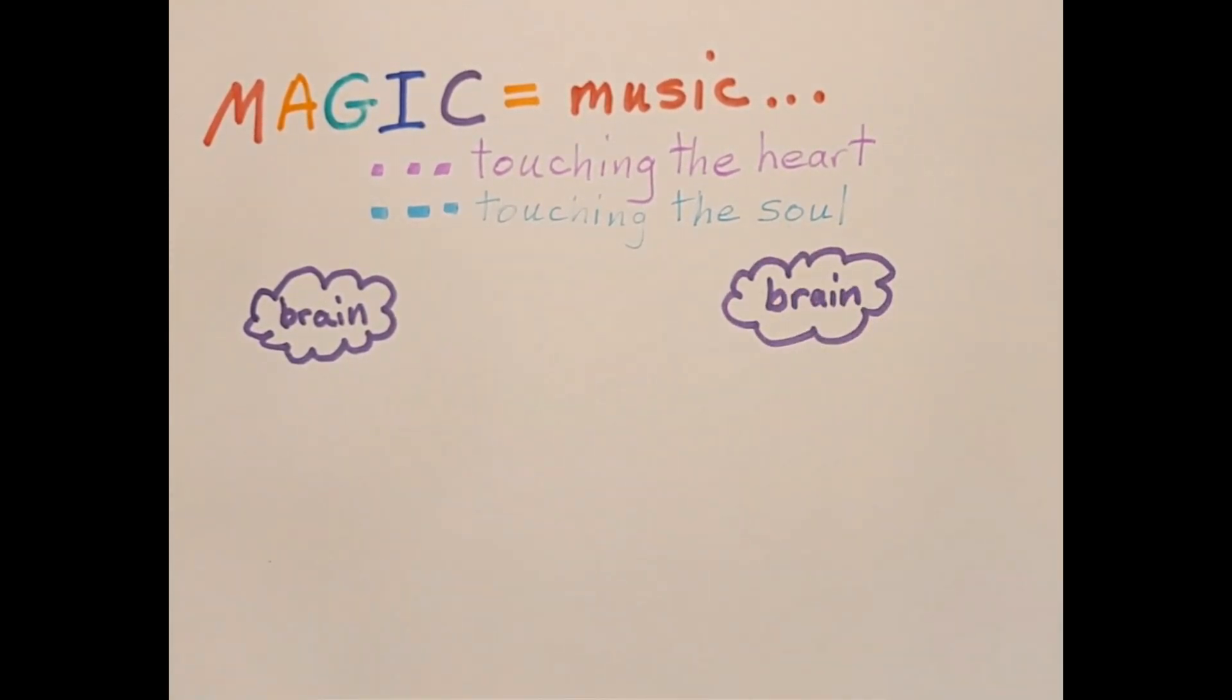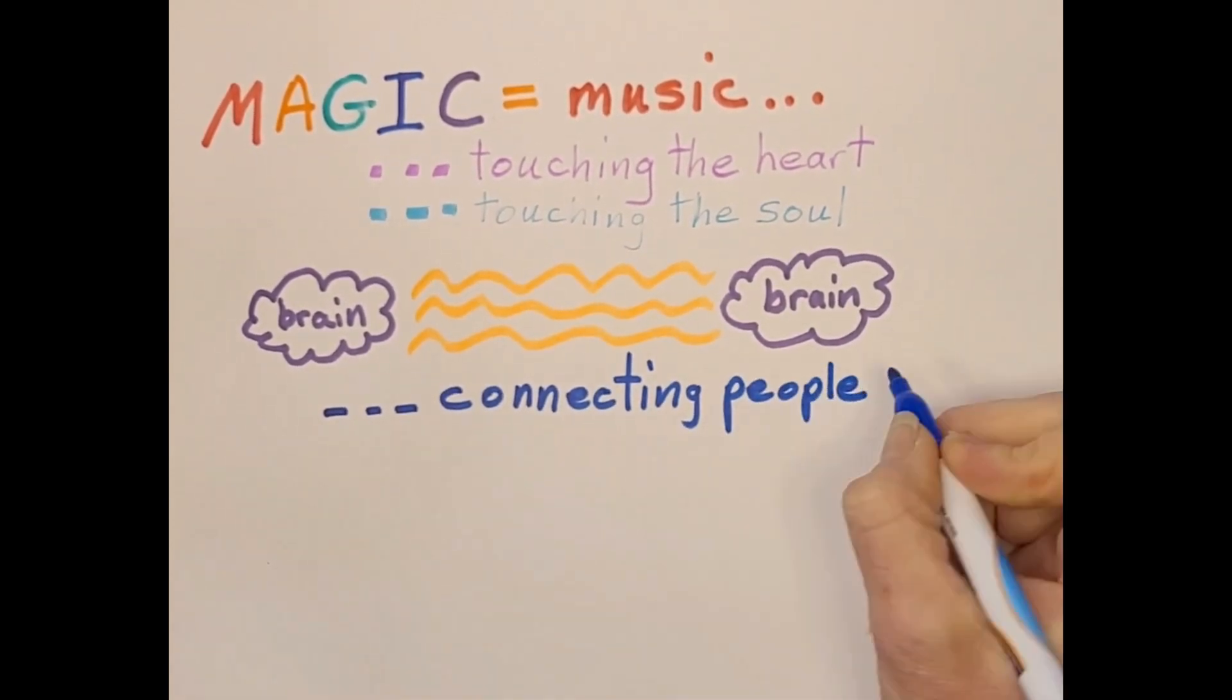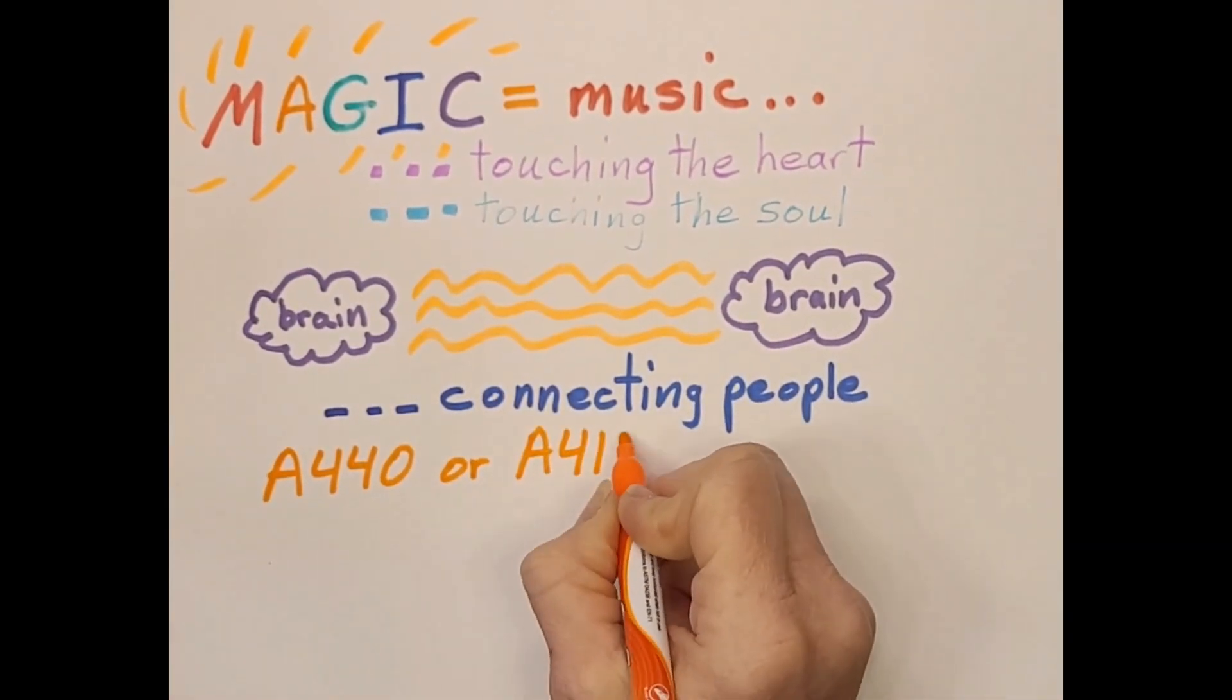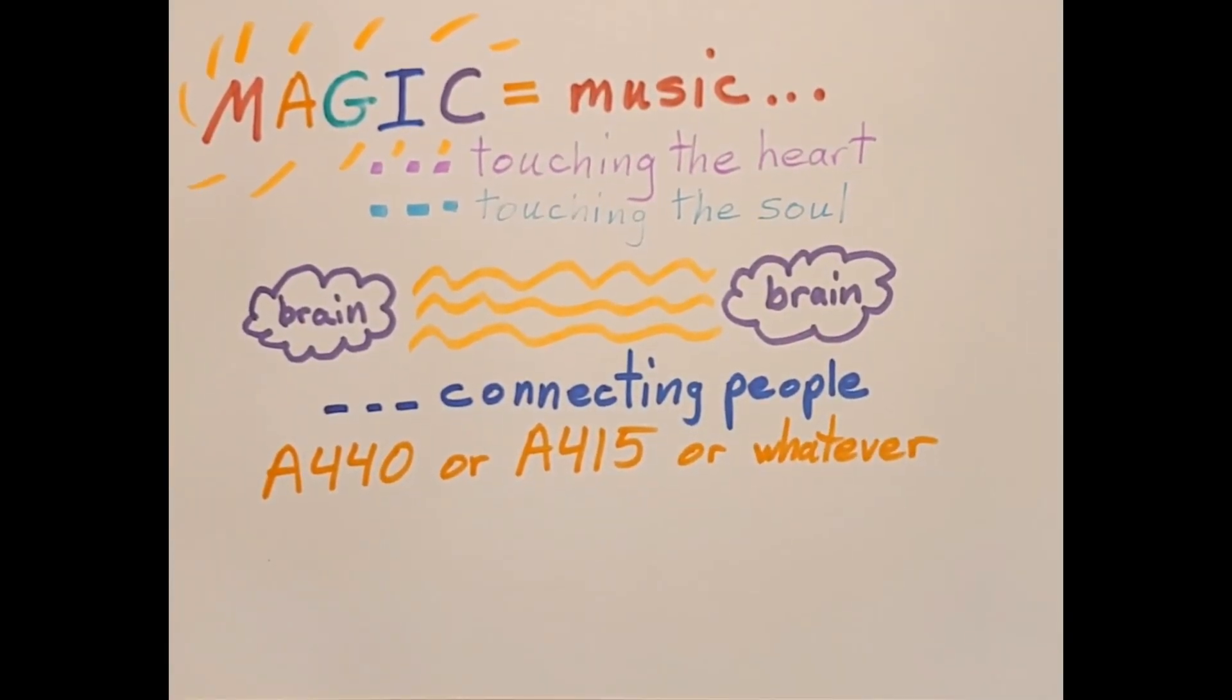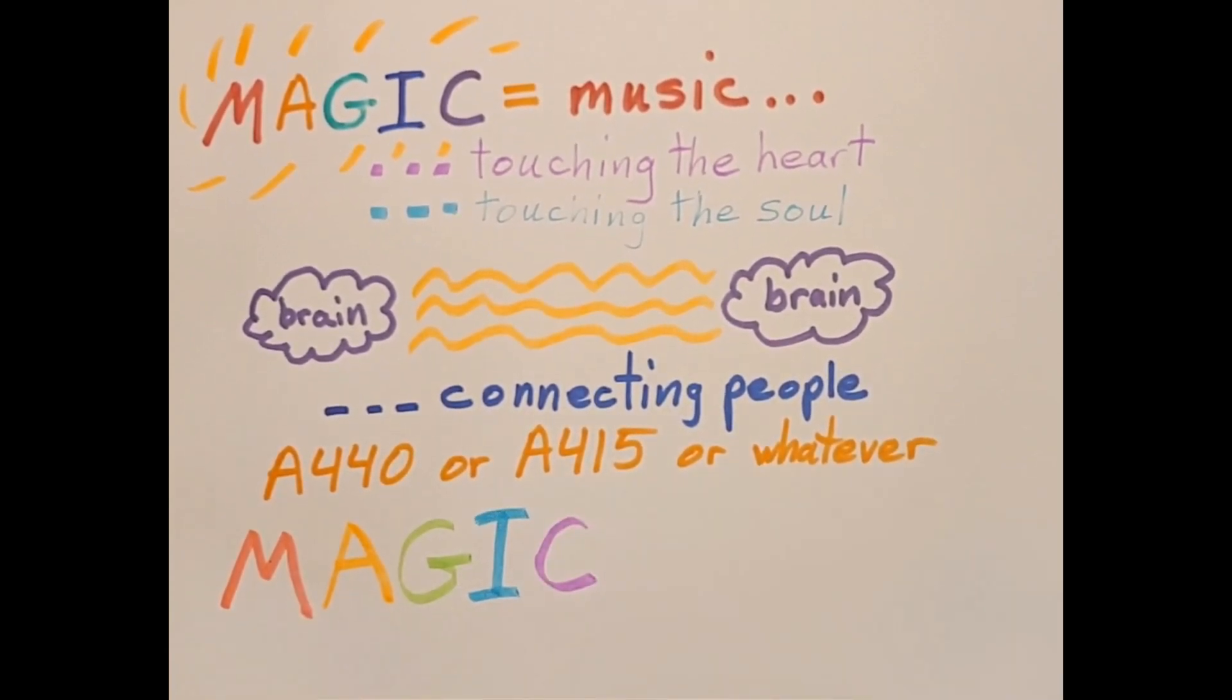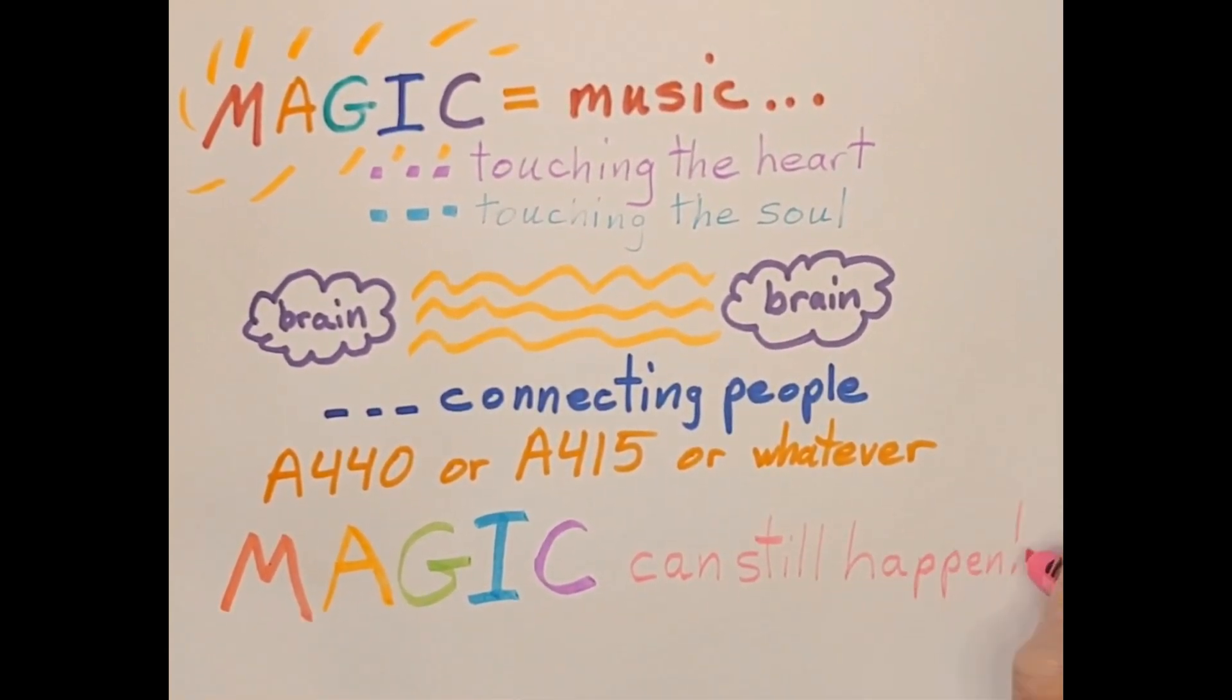So tune your piano to A440 if you want to play with other musicians, or A415 if you want to play with Baroque musicians, and be content knowing your magic frequency is there somewhere. And maybe, just maybe, there is more magic in our music than can be summed up by one single number.